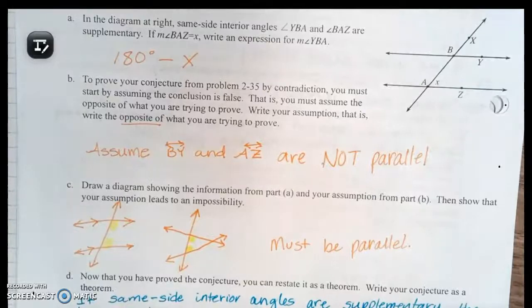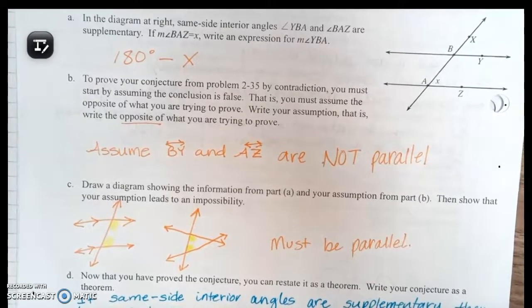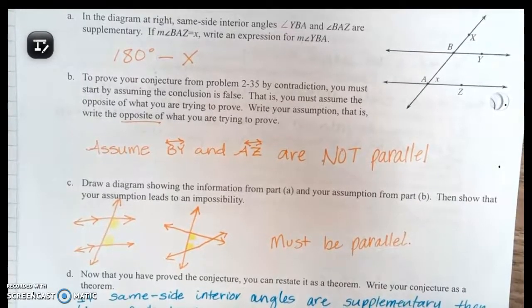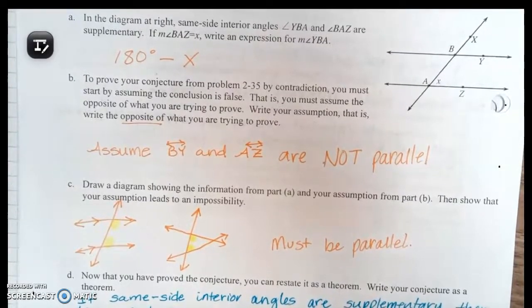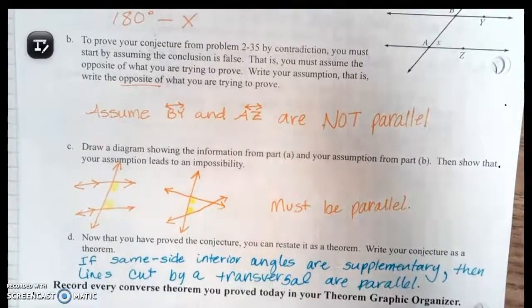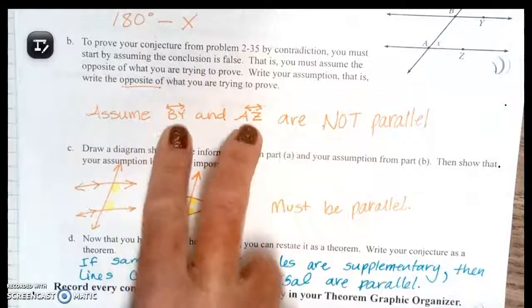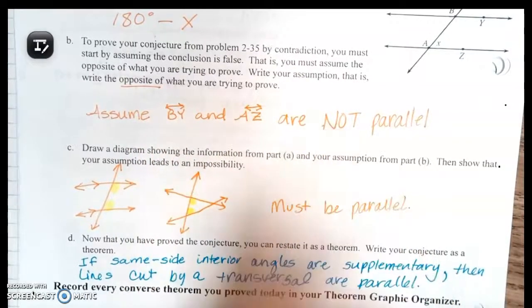Part B: to prove your conjecture from problem 35 by contradiction, you must start by assuming the conclusion is false. That is, you must assume the opposite of what you are trying to prove. Write your assumption, that is, write the opposite of what you are trying to prove. We're going to assume that BY and AZ are not parallel.